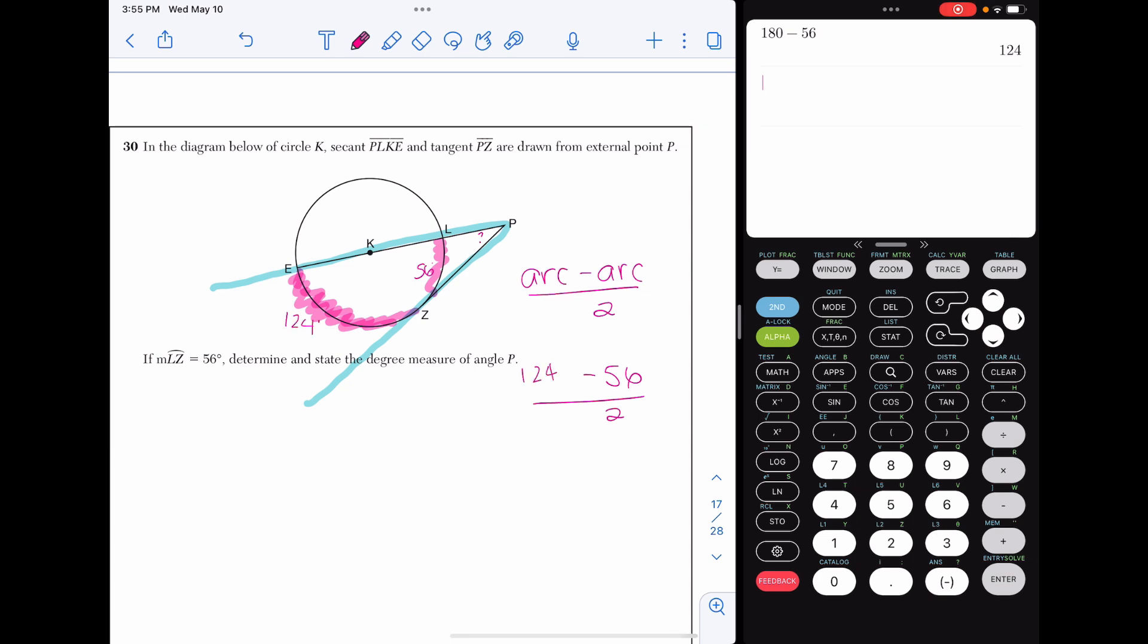I want to figure out what that pink scribbly arc is. So I know that EL is a diameter that splits a circle in half. So I know the bottom half of this circle must be 180 degrees. So if we already have a 56, I know this has to be 124. Now I can apply the formula. So 124 minus 56 divide by two and I get that angle P is 34 degrees.